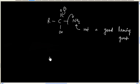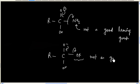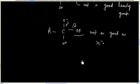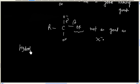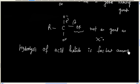In case of ester, you will have OR minus. OR minus is the leaving group. This is also not as good as X minus. That is halogen. That is why hydrolysis of acid halide is fastest among all acid derivatives.